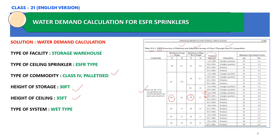Here we are considering a K factor of 14.8 with upright or pendant orientation. Since this is a warehouse, we consider upright sprinklers. The minimum operating pressure for this sprinkler is 5.2 bar, which converts to 75 PSI.